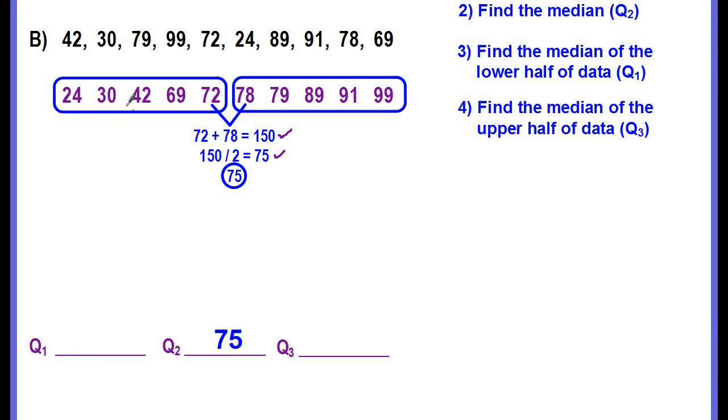To find our Q1, Q1 is going to be the median of the lower half of the data. Luckily, 1, 2, 3, 4, 5, there's five numbers. So we can easily find the median, which is going to be 42. This is quartile 1, Q1, our first quartile.